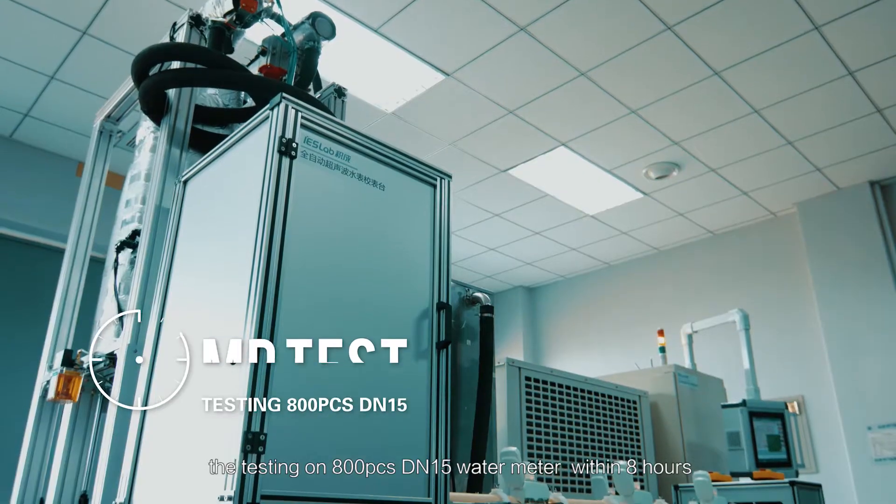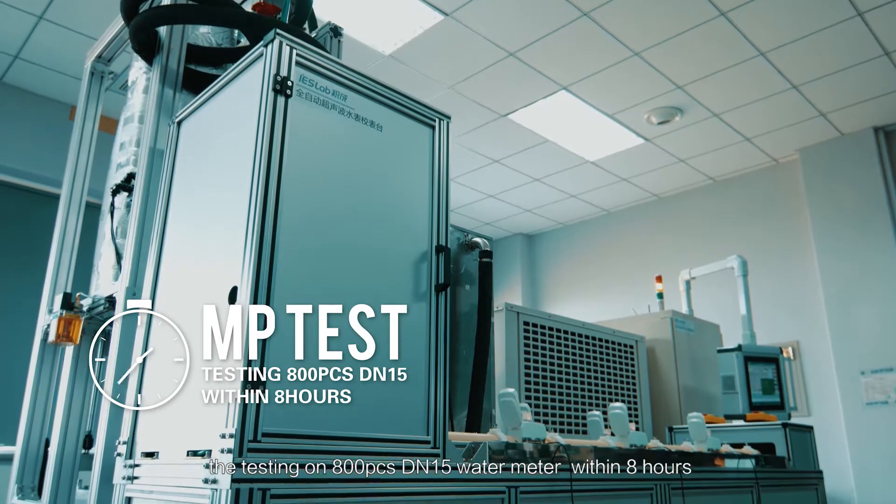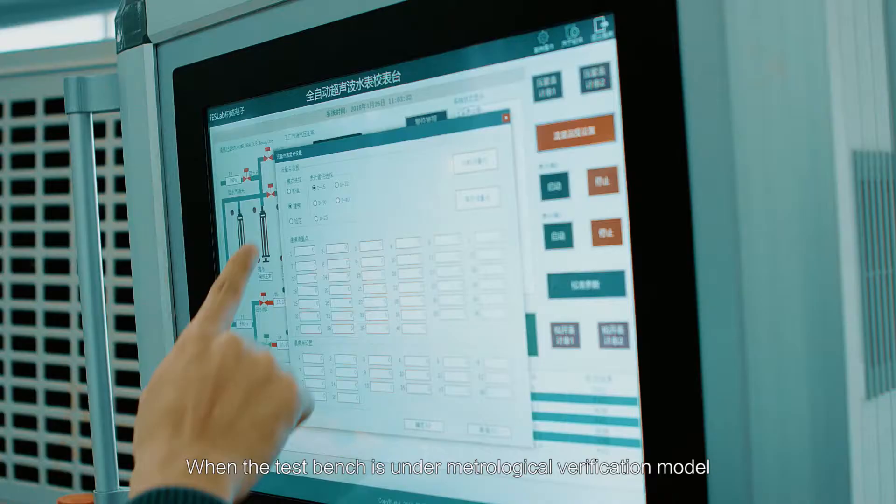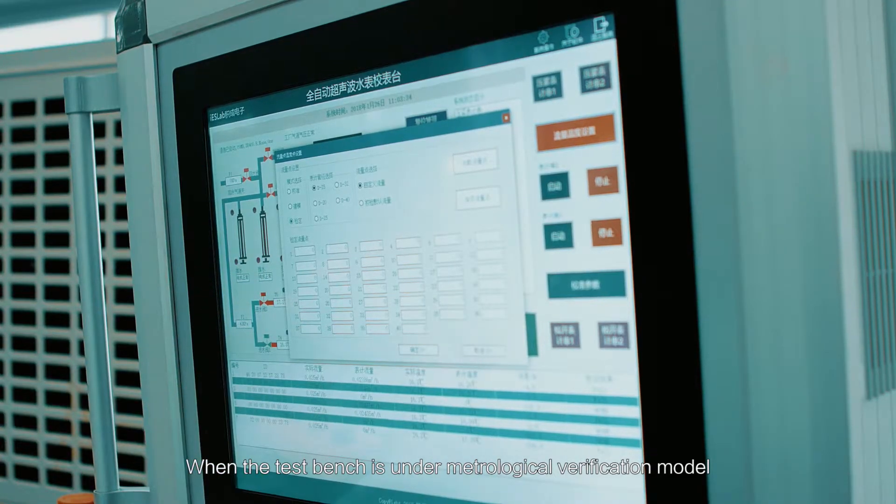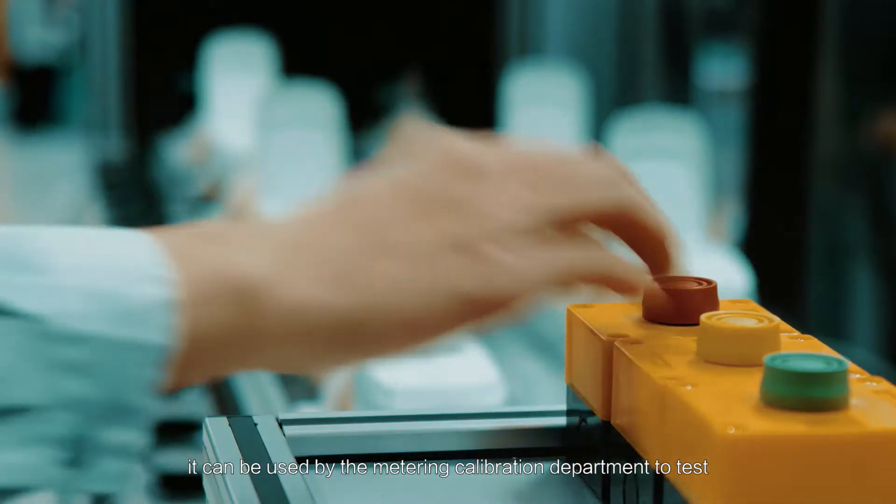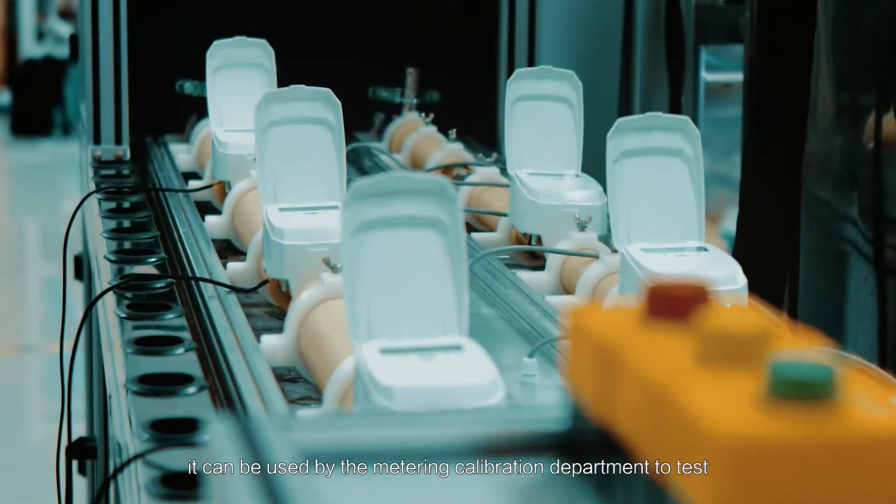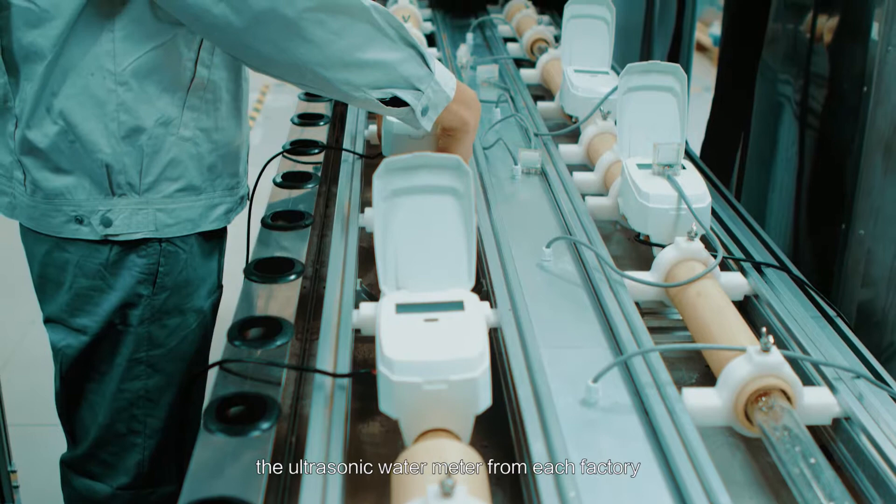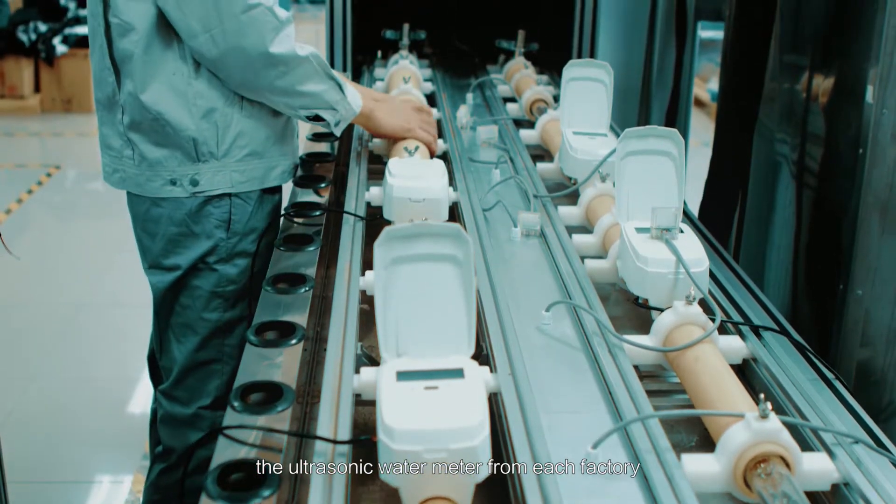The top configuration test bench will be able to finish the testing on 800 pieces DN 15 water meters within eight hours. When the test bench is under meteorological verification model, it can be used by the metering calibration department to test the ultrasonic water meter from each factory, or it can be used as the delivery inspection of the water meter.